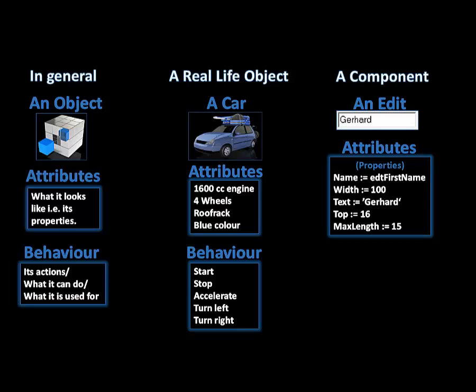An edit's attributes are described through its properties. These attributes or properties can be the edit's name, width, text, color, and so on. All the properties that you set in the object inspector for an edit are the edit's attributes.